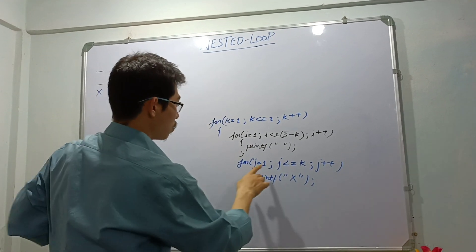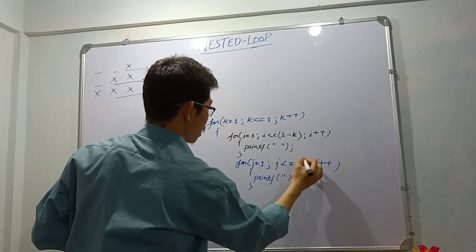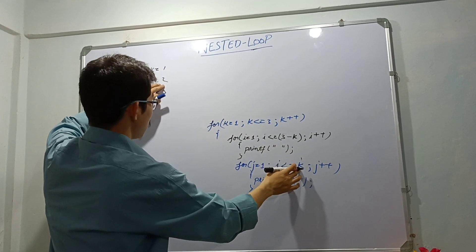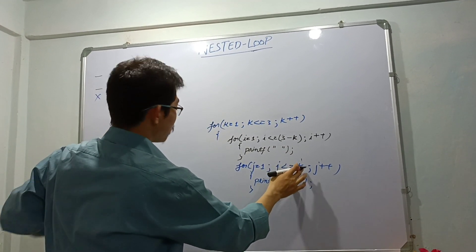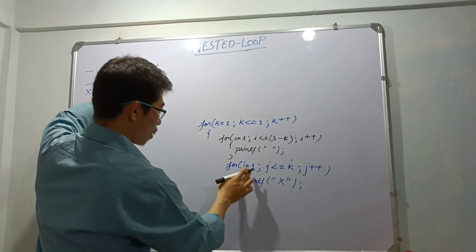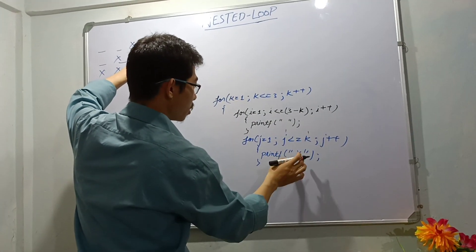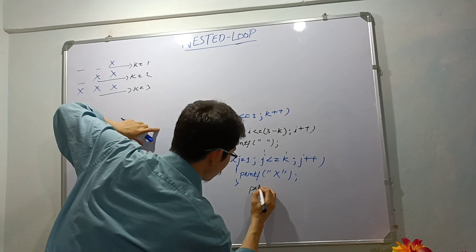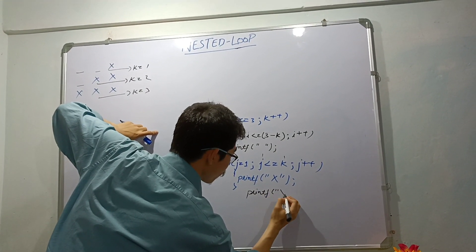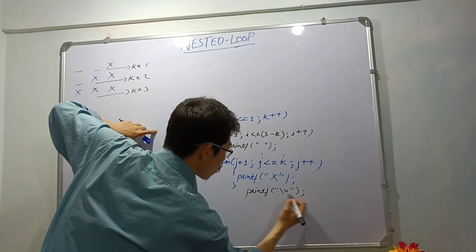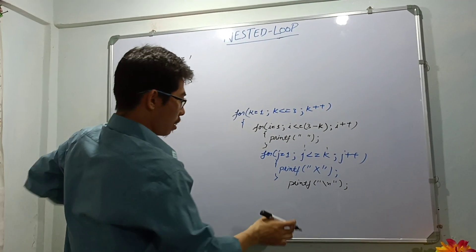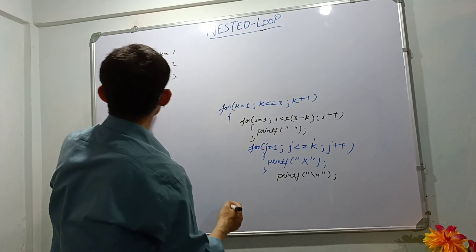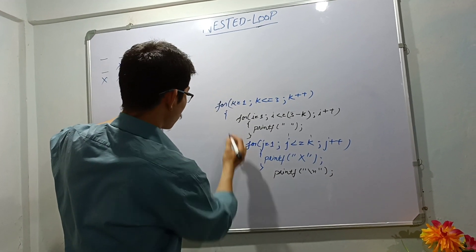When k is 1, line number one, k value will be 1; line number two, k value will be 2; line number three, k value will be 3. When k equals to 1, j is 1, 1 is less than equals to 1, it will print x one time. After that it should go down, so I will write printf newline.